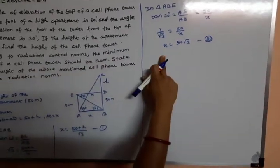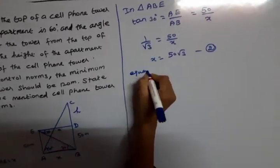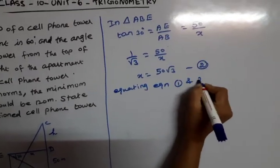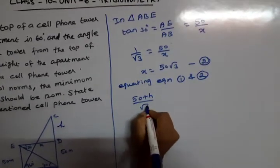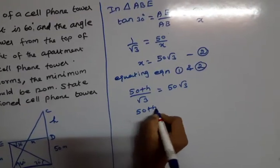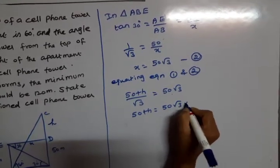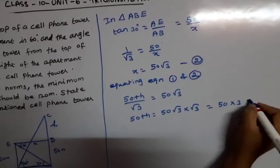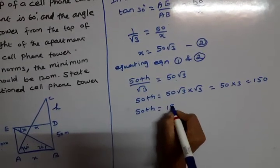From equations 1 and 2, equating: (50 plus h) divided by root 3 equals 50 root 3. Cross multiplying: 50 plus h equals 50 root 3 into root 3, which gives 50 plus h equals 150.